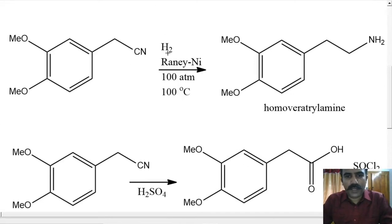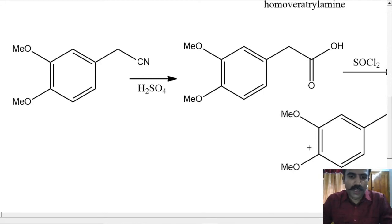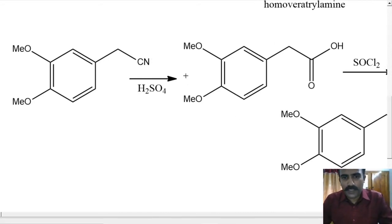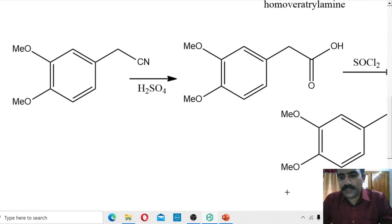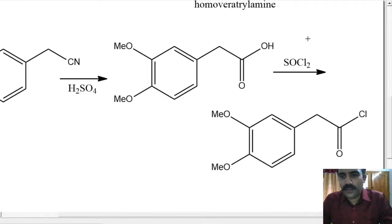In presence of Raney nickel, the nitrile is hydrogenated and the C≡N triple bond becomes an amine. So this is homo-veratryl amine. Now let us see the hydrolysis. Acid hydrolysis can be done on the nitrile compound — it will generally hydrolyze into a carboxylic acid. The mechanism is nice but pretty long, so I won't go through that. Now this acid can be converted into an acid chloride using thionyl chloride, which converts the acid to the corresponding acid chloride.